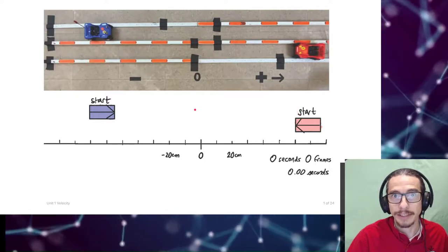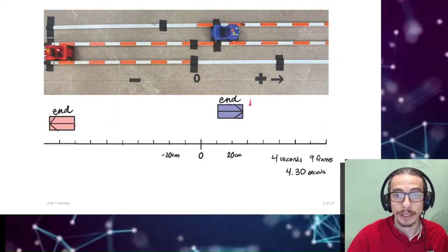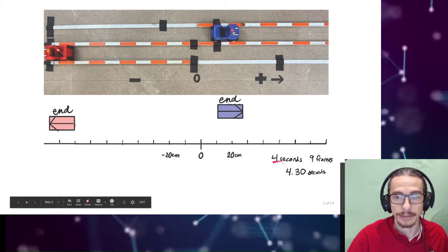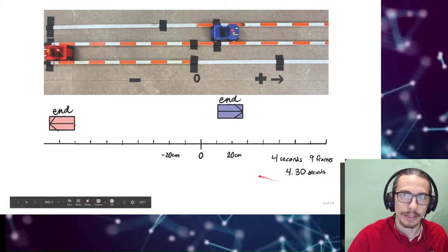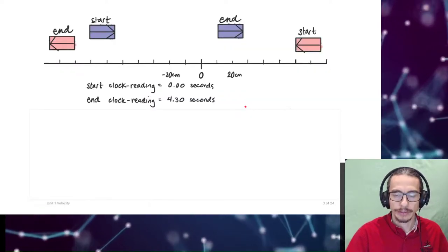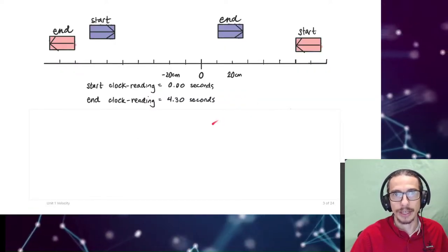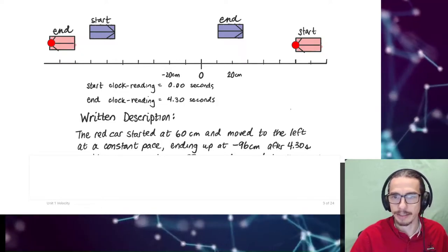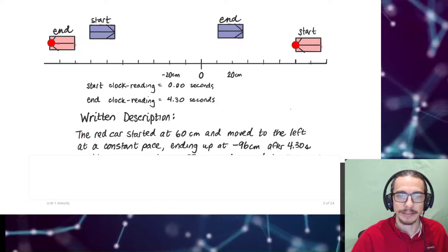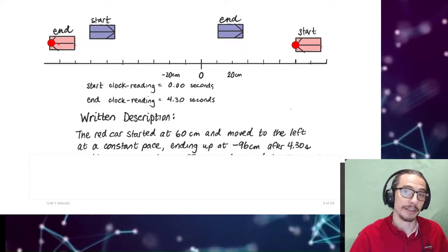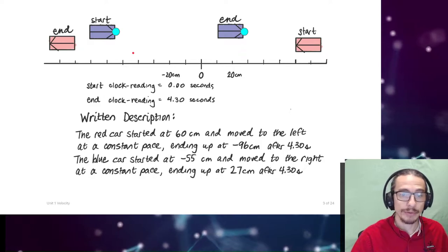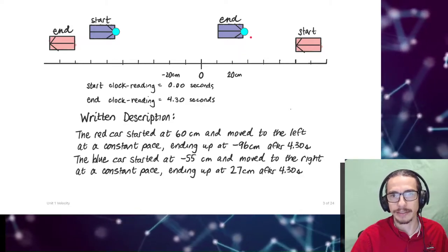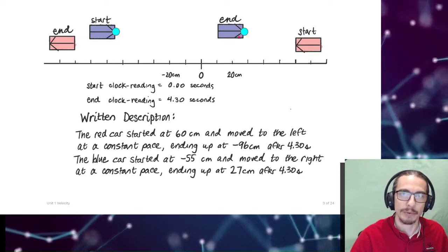Playing the video, the cars traveled a certain distance over a total time of 4.3 seconds (4 seconds and 9 frames). Your first task was to give a written description. For example: the red car started at 60 centimeters and moved to the left at a constant pace, ending at negative 96 centimeters after 4.30 seconds. The blue car started at negative 55 centimeters and moved to the right at a constant pace, ending at 27 centimeters after 4.30 seconds.